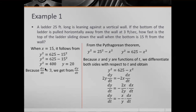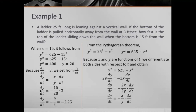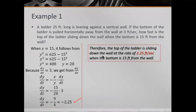Since dx/dt = 3, we substitute into dy/dt = -(x/y) · dx/dt: dy/dt = -(15/20) · 3 = -9/4 = -2.25. Therefore, the top of the ladder is sliding down the wall at the rate of 2.25 feet per second when the bottom is 15 feet from the wall.